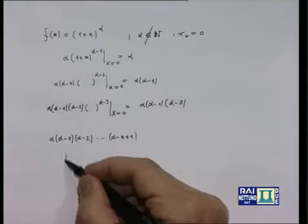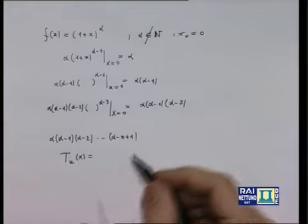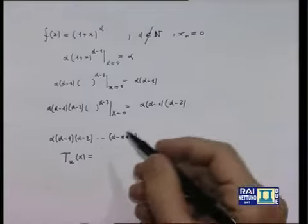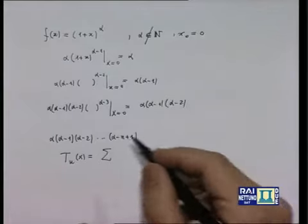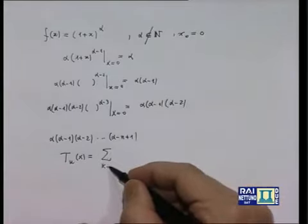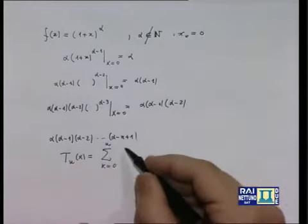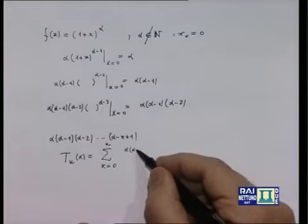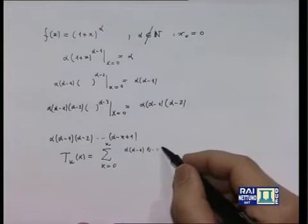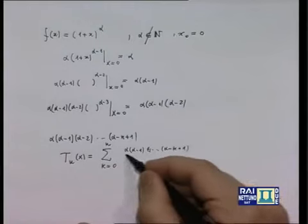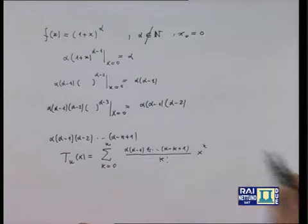Per scrivere il polinomio di Taylor di grado n, questo è così fatto: è la somma per k da 0 a n della derivata k-esima — cioè il prodotto alfa(α-1)···(α-k+1) — diviso il fattoriale di k, tutto moltiplicato per x elevato alla k.